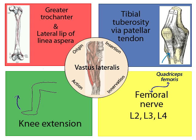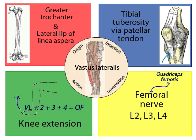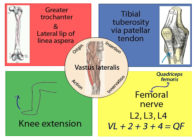The myotome for the vastus lateralis is L2, L3, and L4. A trick for remembering this is that the vastus lateralis is the first muscle in the quadriceps group, along with three other muscles — numbers 2, 3, and 4.